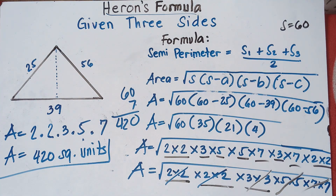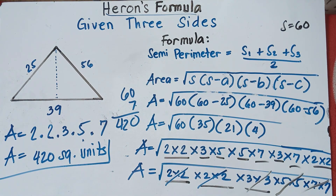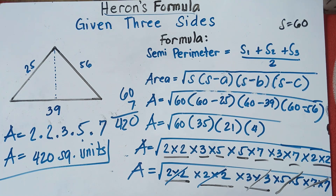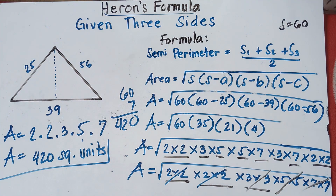Do not forget, since this is area and we don't have the units, we use square units. So the area equals 420 square units. That's how you solve using Heron's formula. If you like this video, please subscribe and share it with your friends and classmates. If the teacher will not allow you to use a calculator, just use the prime factorization. Have a great day, goodbye!